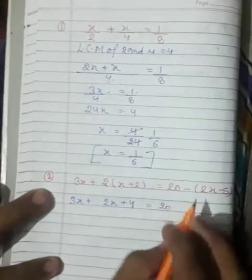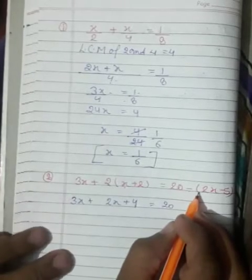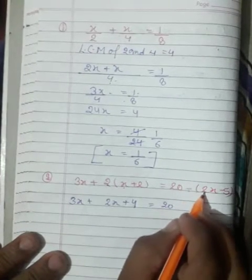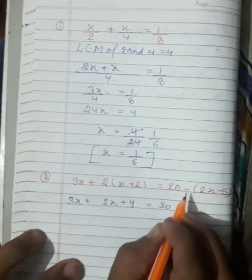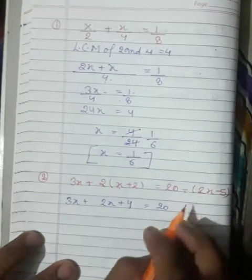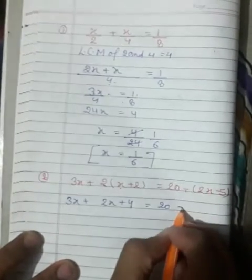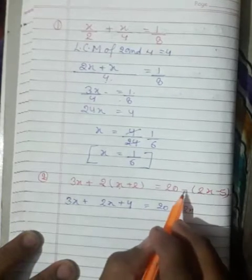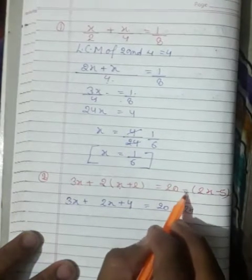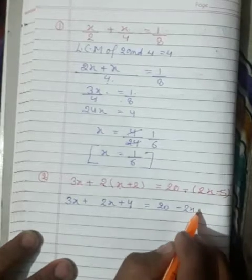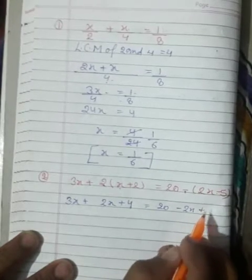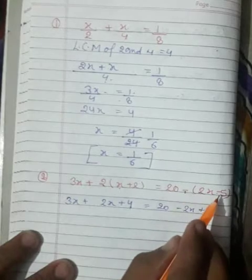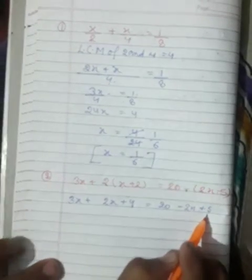Students, here there is a minus sign before the bracket. Minus multiplied by minus 2x, we get minus 2x. And minus multiplied by minus, we get plus. Minus multiplied by minus 5, we get plus 5.